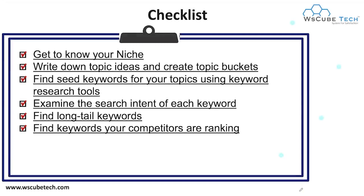The first item on your checklist is to get to know your niche — you must know what niche you want to work in. Then you have to write down topic ideas and create your topic buckets. Then you have to find the seed keyword for your topic using a keyword research tool, whether it's free or paid. Then you have to examine the search intent for each keyword.